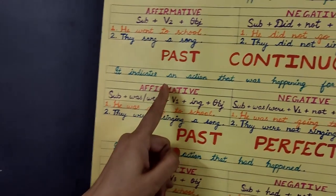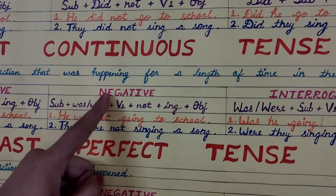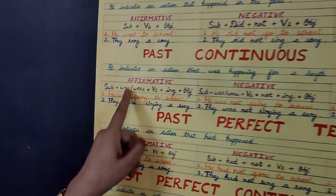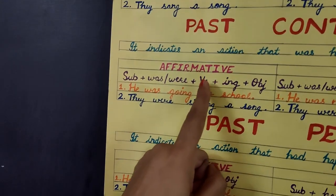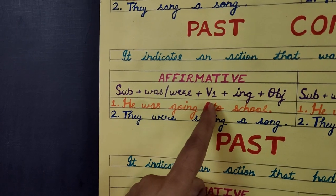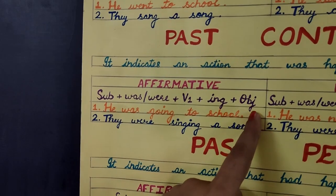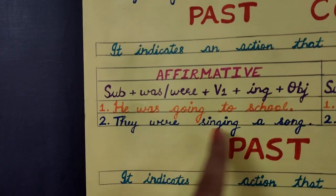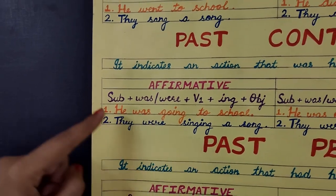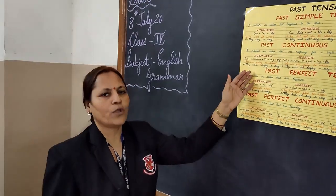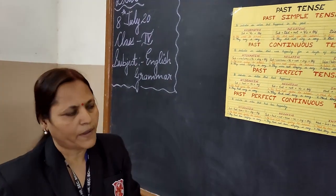Now let's move towards past continuous tense. It indicates an action that was happening for a length of time in the past. Here you can see the structure of the affirmative sentence: subject plus was/were plus verb one plus ing plus object. For example: He was going to school. They were singing a song. Here he and they are the subject, was/were are the helping verbs, and going and singing are the -ing form of the verb. School and song are the object.